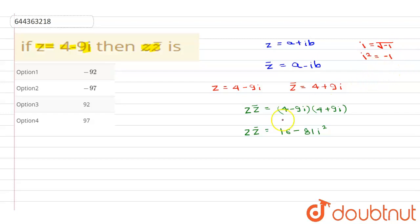Now if this is the case put i square is equal to minus 1 in this equation. We get z into z cap is equal to 16 plus 81 which is equal to 97.